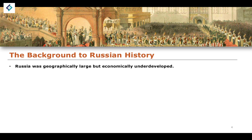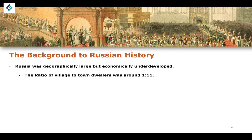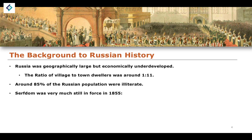Russia itself, from a geographical perspective, was very large and economically underdeveloped, especially compared to the rest of the Western world and Western Europe. The ratio of village to town dwellers was around 1 to 11, showing quite a significant disparity in socioeconomic conditions between those two groups. There were also significant problems in relation to education — around 85% of the Russian population were illiterate, which was a very problematic issue when talking about the socioeconomic development of the Russian state.